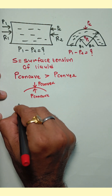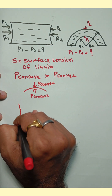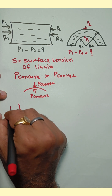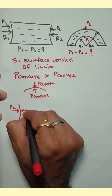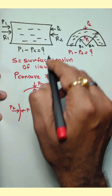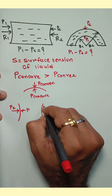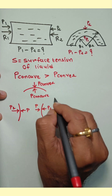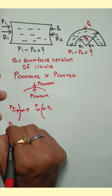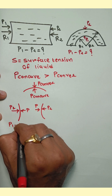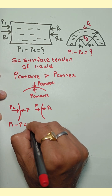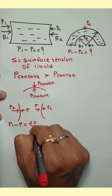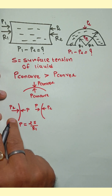Now see here. In the left side portion, pressure on the concave side is given as P1, and pressure on the convex side is P. For the right side figure, P2 is the pressure on the concave side and P is the pressure on the convex side. So we can write: P1 minus P equals P concave minus P convex, which equals 2S upon R1, the radius of curvature of this surface.